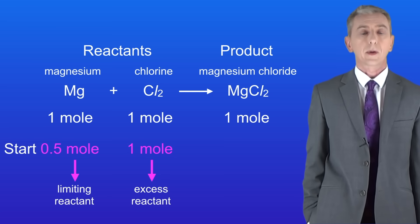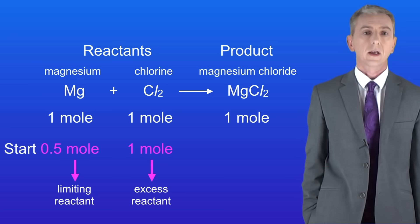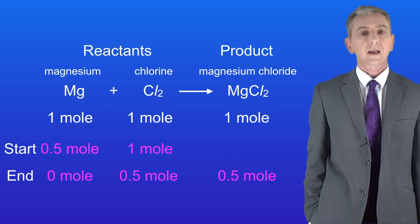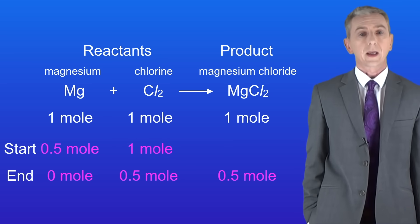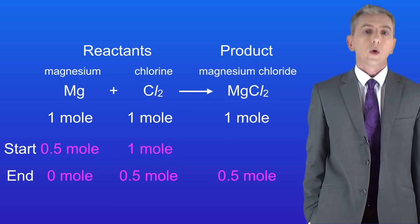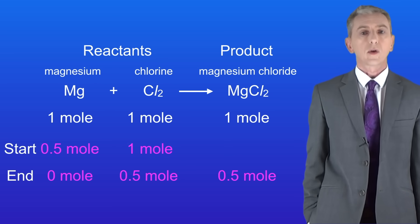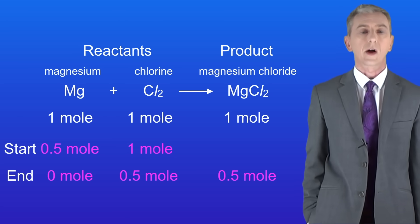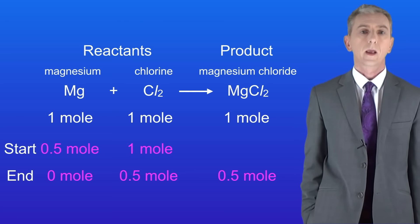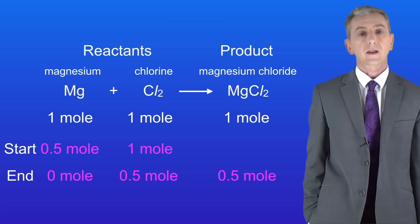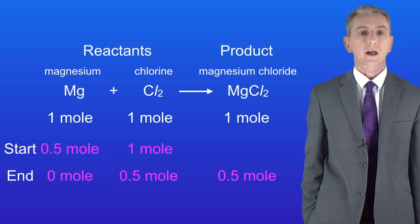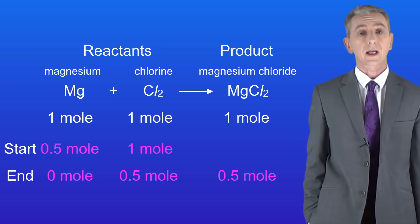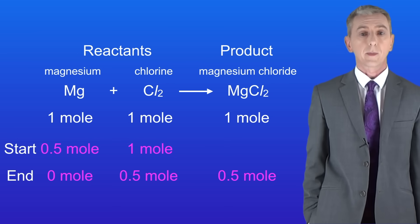So let's see what would happen in this reaction. As the reaction proceeds the magnesium would all get used up. We would use up 0.5 moles of the chlorine and we'd make 0.5 moles of magnesium chloride. In the exam you could be asked to predict the outcome of a reaction taking into account which reactant is in excess and which is limiting.